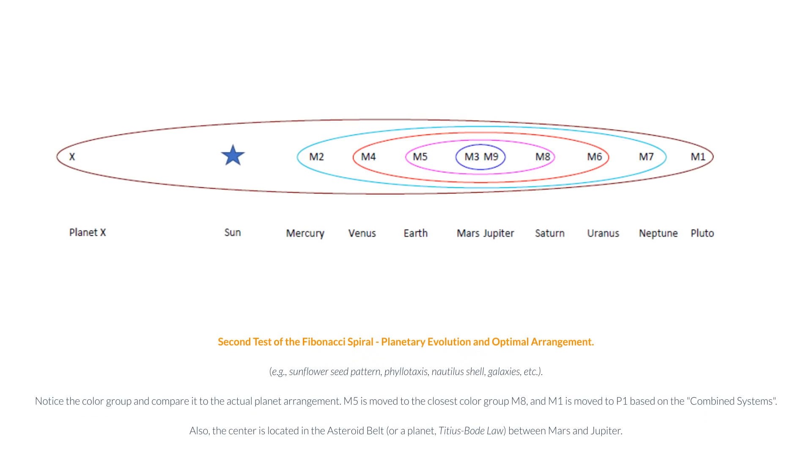Second test of the Fibonacci spiral: planetary evolution and optimal arrangement. Examples include sunflower seed pattern, phyllotaxis, nautilus shell, galaxies, etc. Notice the color group and compare it to the actual planet arrangement. M5 is moved to the closest color group M8, and M1 is moved to P1 based on the combined systems. Also, the center is located in the asteroid belt, or a planet Titius-Bode Law, between Mars and Jupiter.